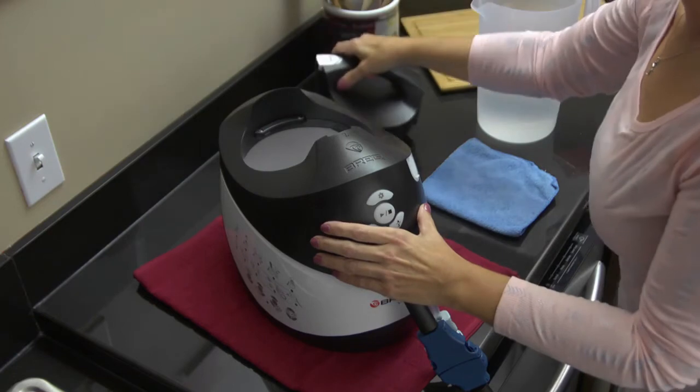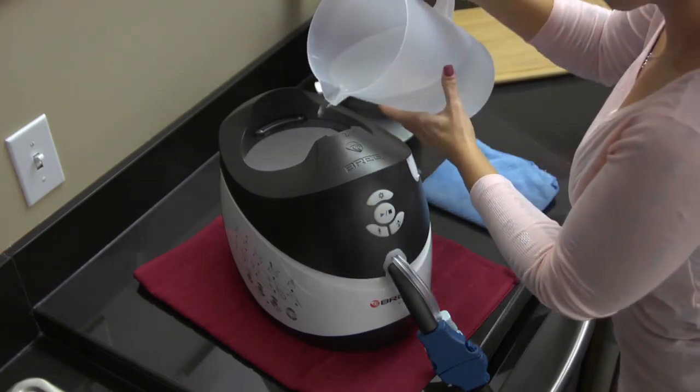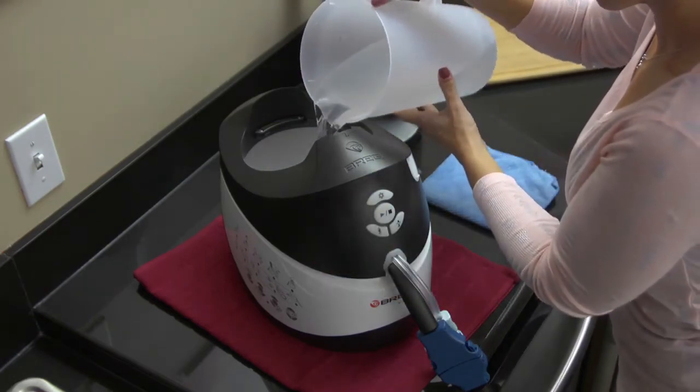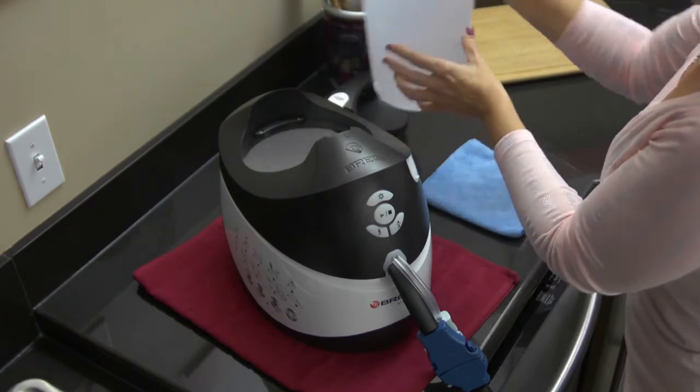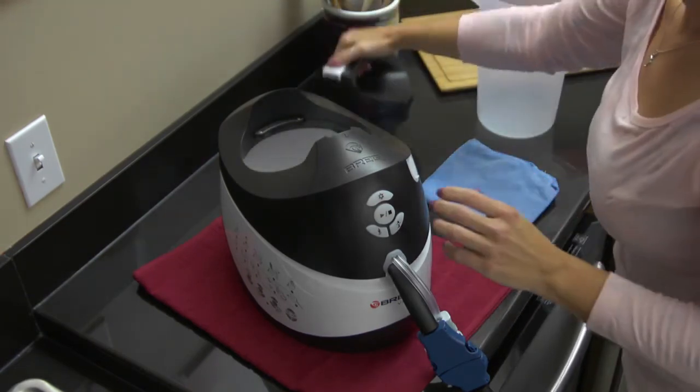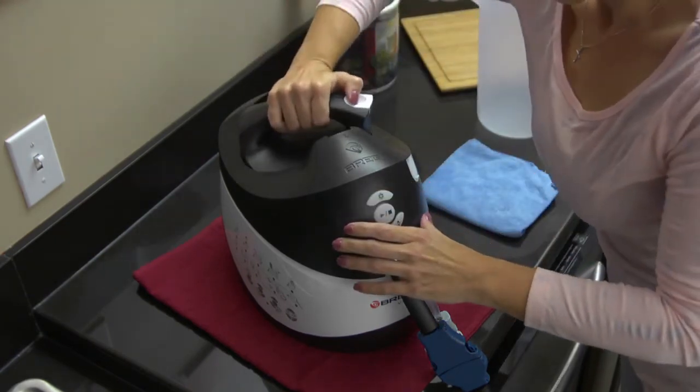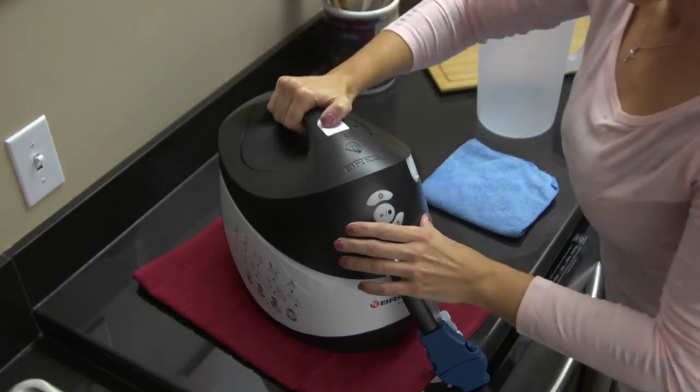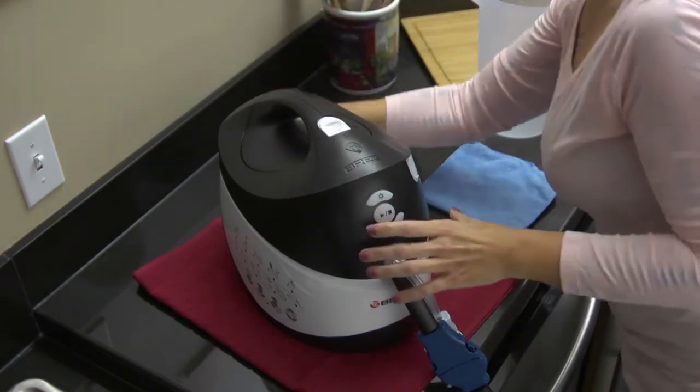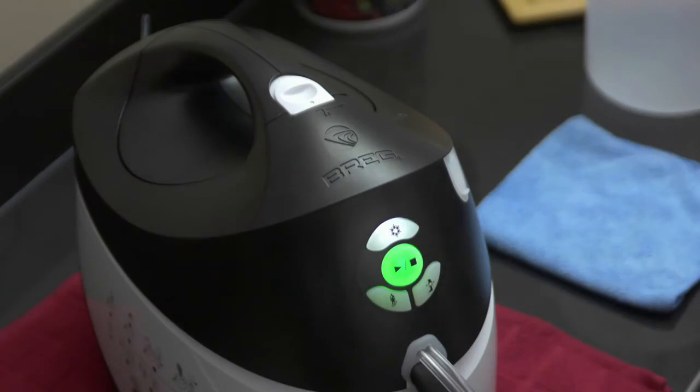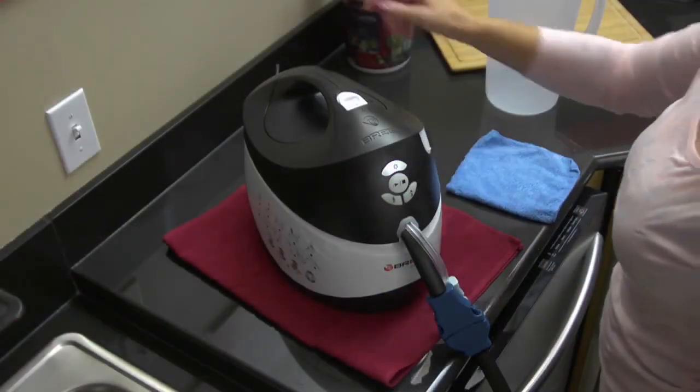Remove the electrical cord and fill the empty container to the max fill line with fresh, room temperature water. Do not use any cleaning solutions in the water reservoir as these solutions could damage the water pump and therapy pads. Replace the handle and connect power. Operate the system for 10 minutes and then empty the water reservoir.